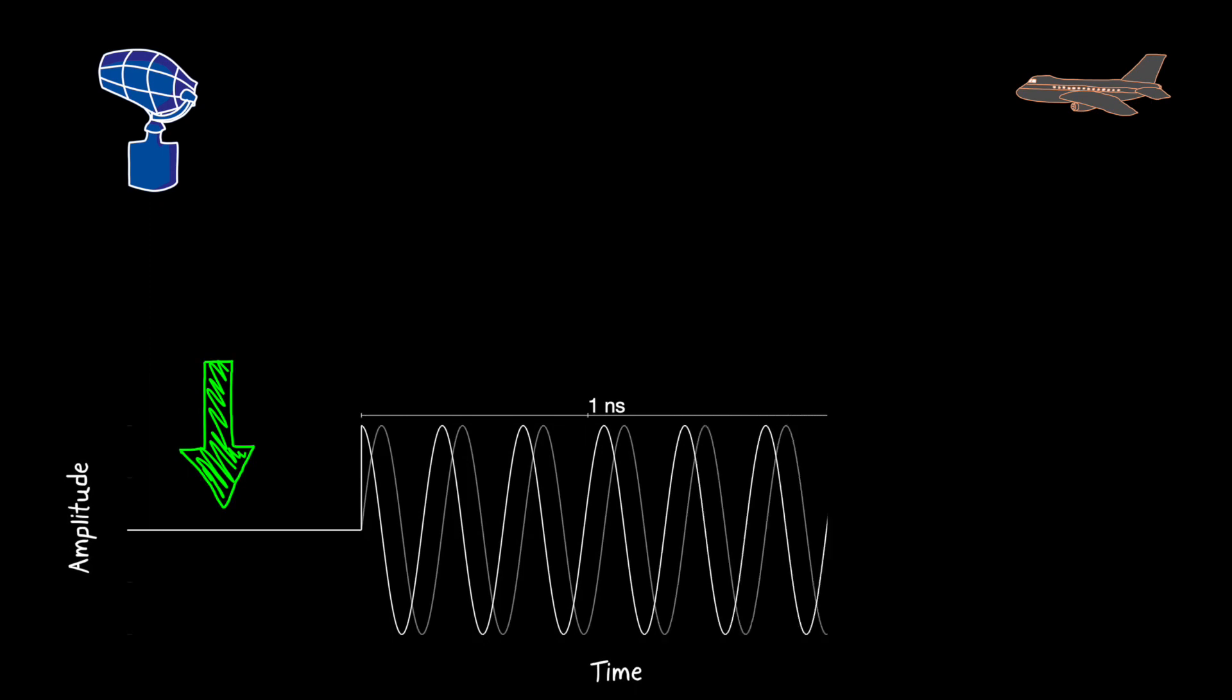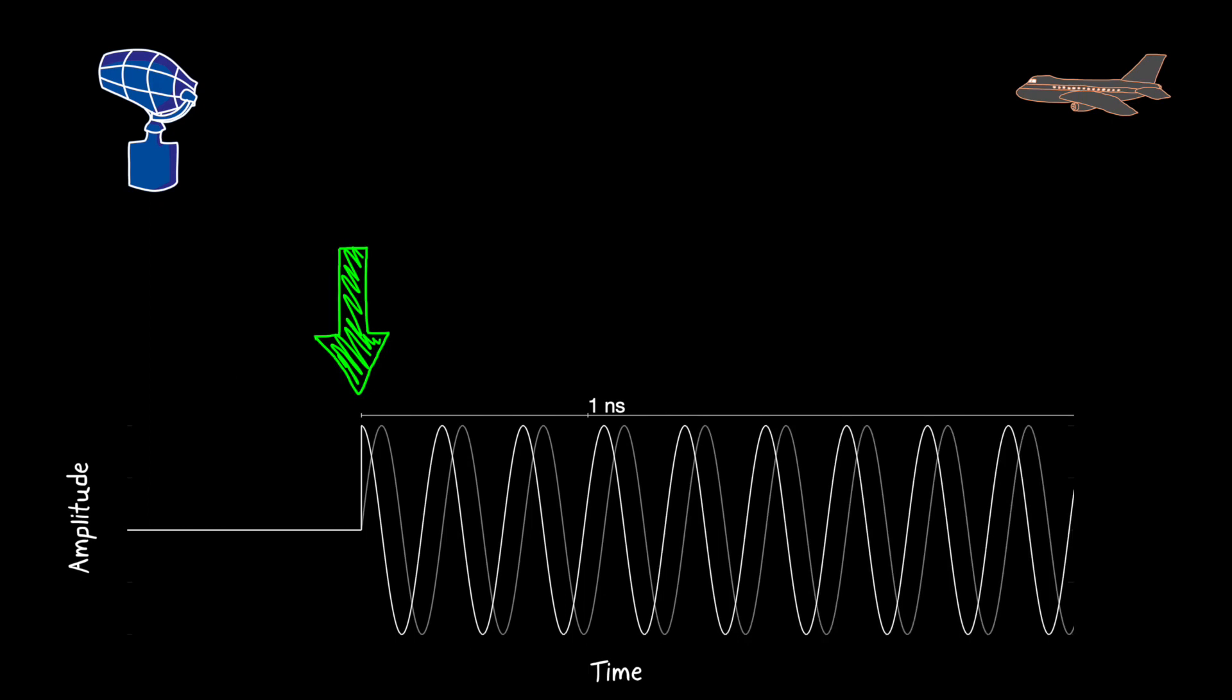At first, there's a period where the transmitter is silent and no signals are being sent. Then, at the beginning of the pulse, it starts to transmit the IQ signals. There are different modulation schemes that can be used within the pulse, but here I'm just showing a fixed frequency of 2.8 GHz.